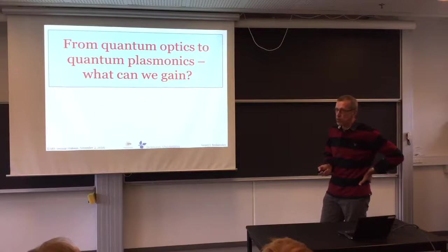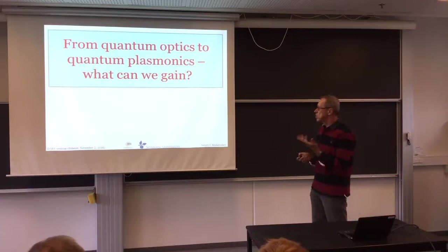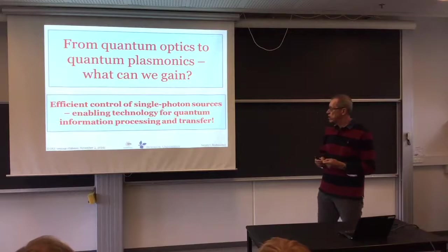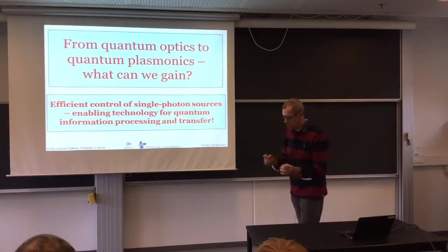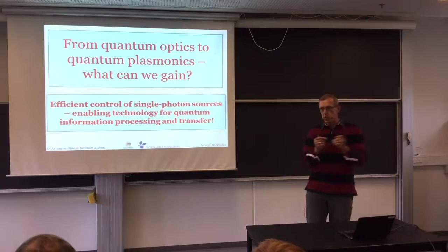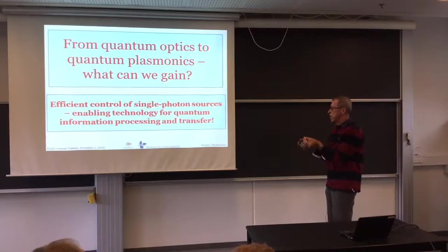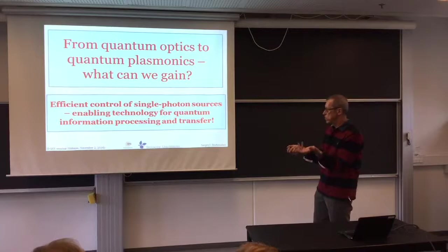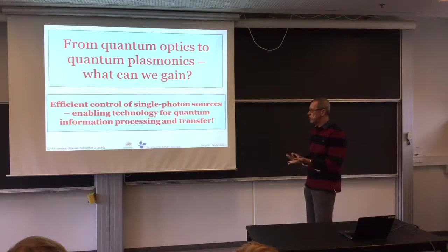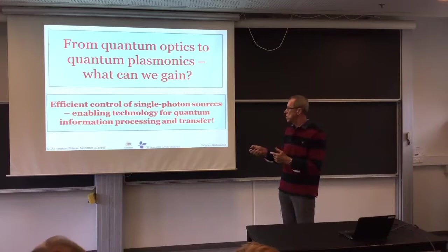Quantum plasmonics is small but lossy — so what can we gain? Quantum information needs special quantum states called qubits that must communicate with each other. One way — perhaps the only way — is by using individual photons, single photons. So you must have a source of single photons. This is called an enabling technology for quantum information: without single photon sources, there is no quantum information processing.